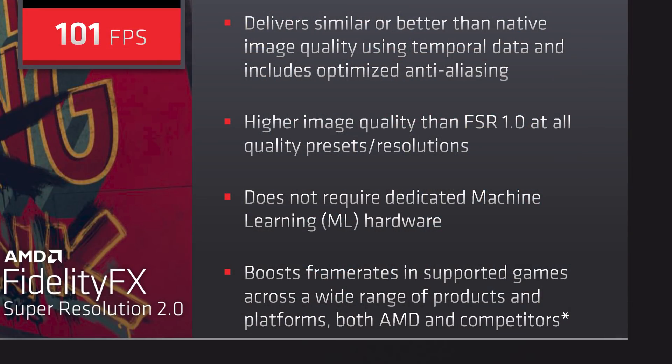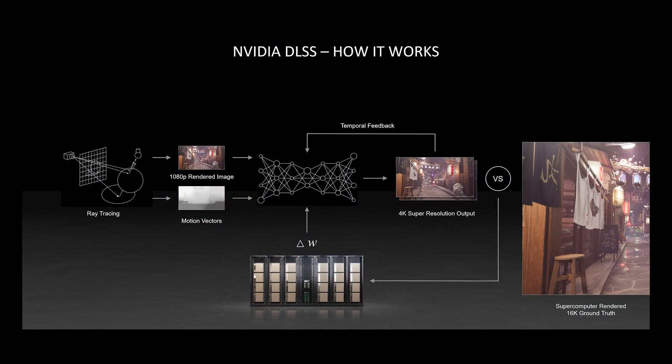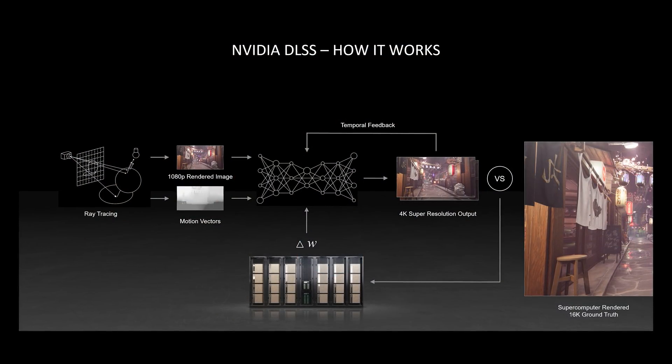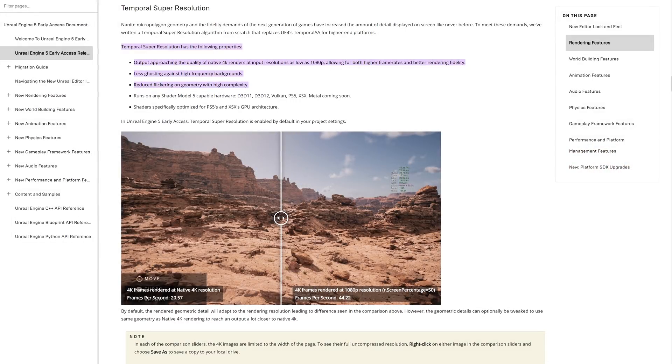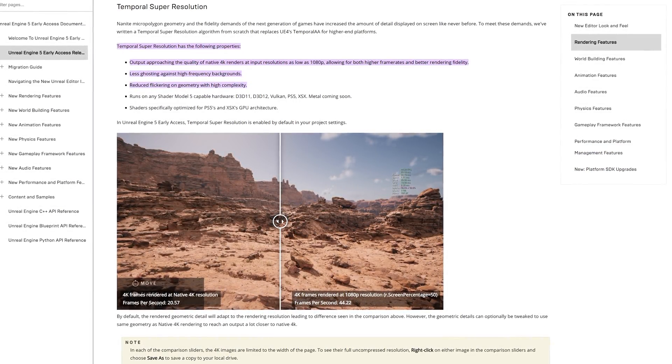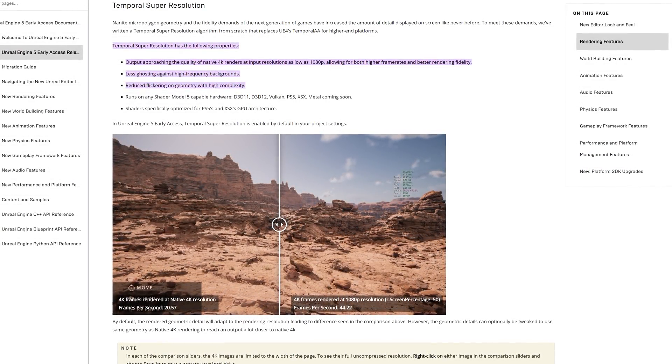Another key aspect to FSR 2.0 is that it does not require dedicated machine learning or AI hardware to run. When we asked AMD, they said AI was not used in creating the algorithm — so FSR 2.0 is not based on AI like DLSS is. Some will use this to discredit AMD, but the reality is DLSS in its current form is only using a generalized AI algorithm applied to all games. It is possible to create a generalized temporal upscaling algorithm without AI — Epic Games have done so in Unreal Engine 5 — it's just a question of how good it is, and we don't really know yet without testing.